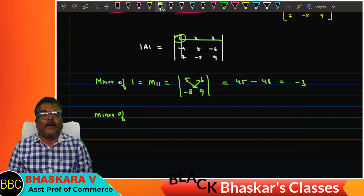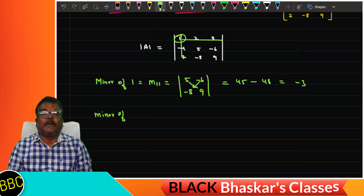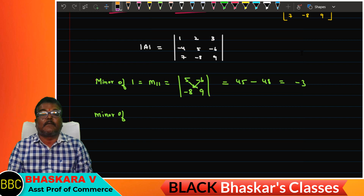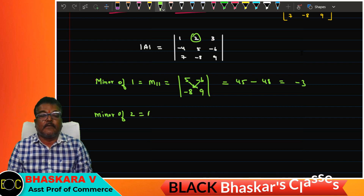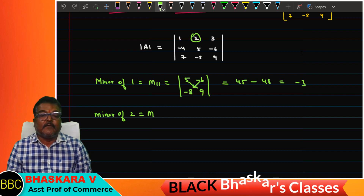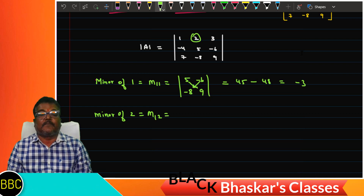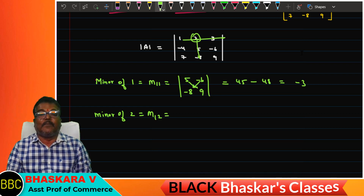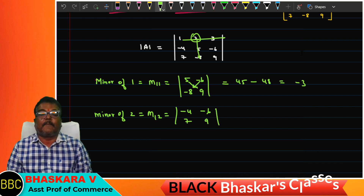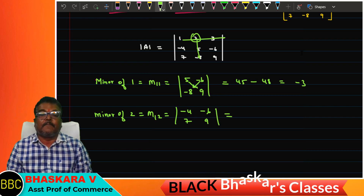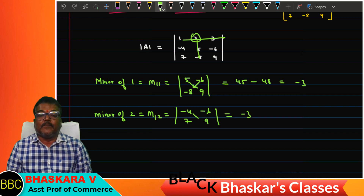Minor of 2: calculate — minor of 2 equals, at first row, second column. Elements: 6, column — minus 4, minus 6, 7, 9. Result: minus 36.